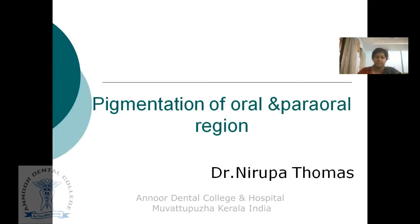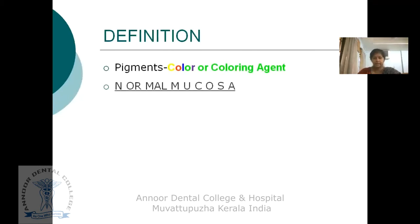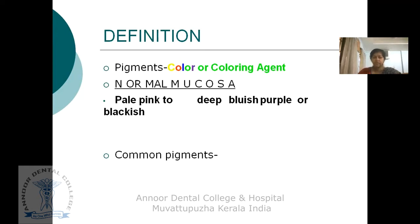Good morning students. Today we are going to discuss about pigmentation of the oral and paraoral region. Pigments are color or coloring agents. As you know, our normal mucosa is pale pink to purple or black in color, and the color depends upon melanogenesis and distribution of melanin pigment, keratinization, depth of epithelization, and vascularity.